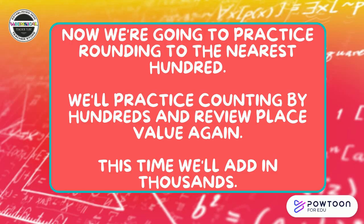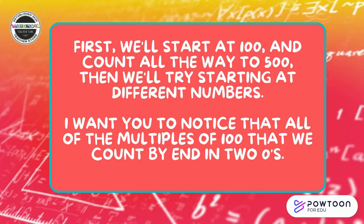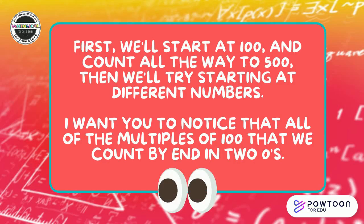Now we are going to practice rounding to the nearest hundred. We'll practice counting by hundreds and review place value again. This time, we'll add in thousands. First, we'll start at 100 and count all the way to 500. Then we'll try starting at different numbers. I want you to notice that all of the multiples of 100 that we count by end in two zeros — double zeros!